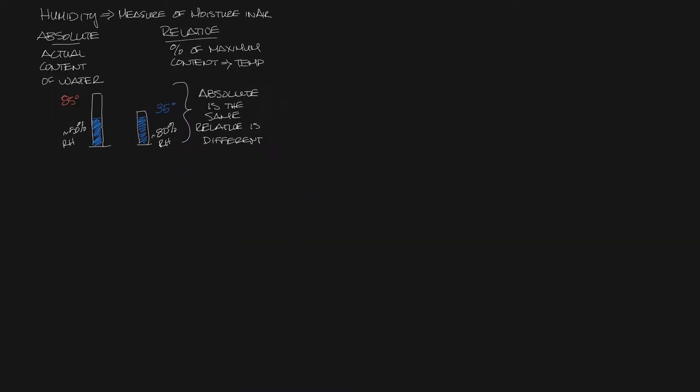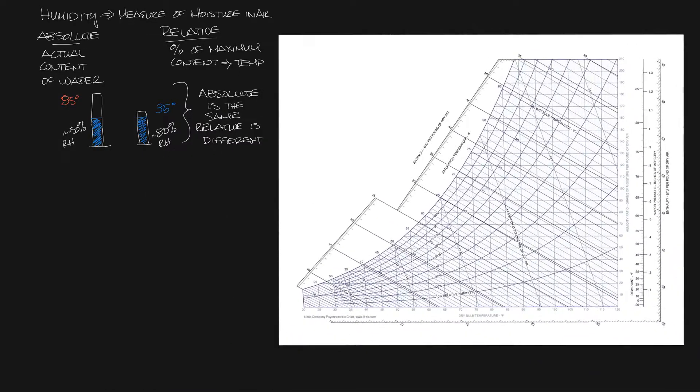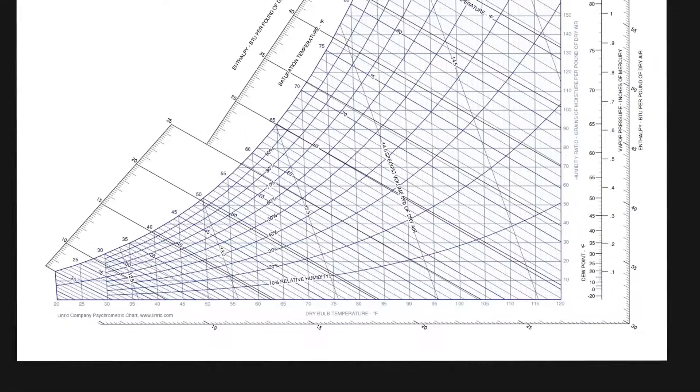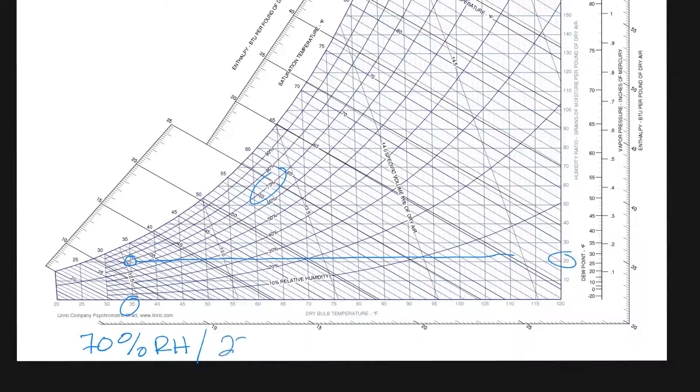Let's take this over to a psychrometric chart and look at this in real numbers. Let's look down here at 35 degrees and let's get the 70 percent humidity curve. Take this over to the right and you can see that we're probably about 22 grains is the absolute humidity.